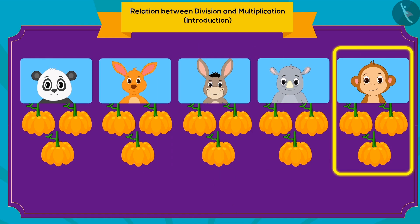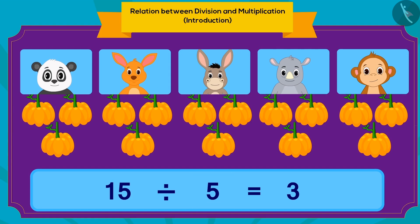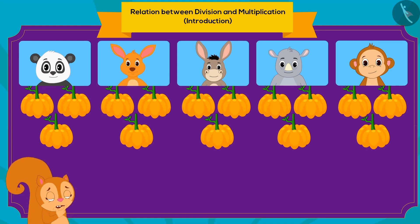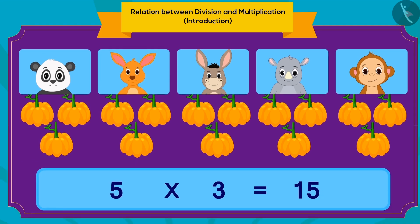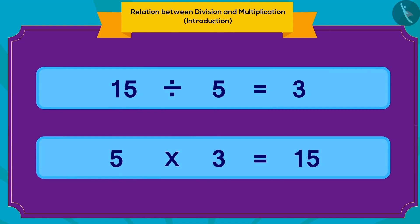How can we write this using division? When you divide 15 pumpkins equally into five parts, you get three pumpkins in each part. We have five friends and each friend gets three pumpkins — we can also write this using multiplication. Five multiplied by three is 15 pumpkins. Children, we can write any division in the form of multiplication.